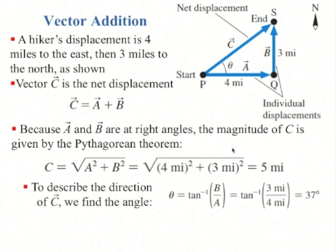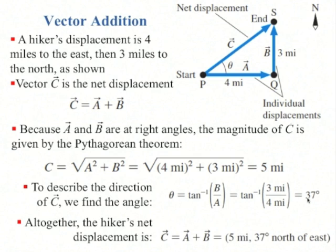To find the direction, you'd have to look at this right angle triangle and work through the trigonometry. The tangent of theta is b divided by a, and so theta is tan to the minus 1, which is the inverse tangent of 3 quarters, which turns out to be 37 degrees. Altogether, c equals 5 miles, 37 degrees north of east.